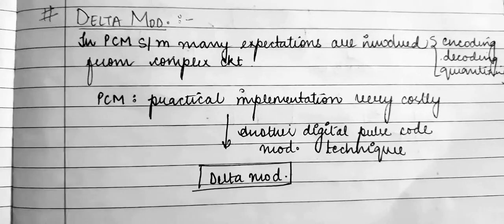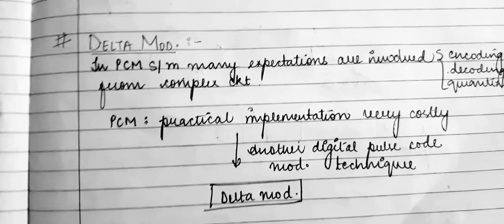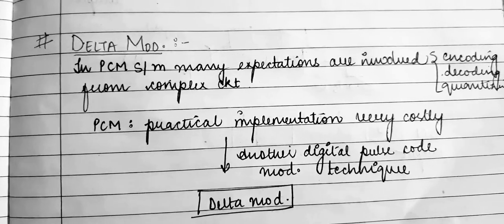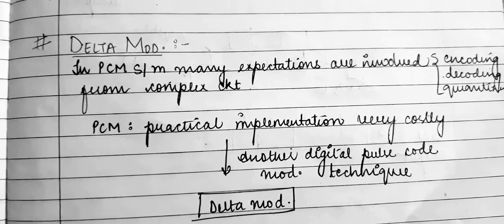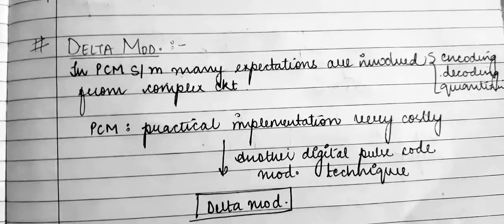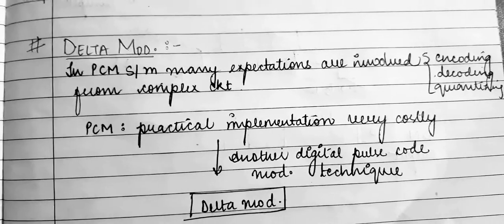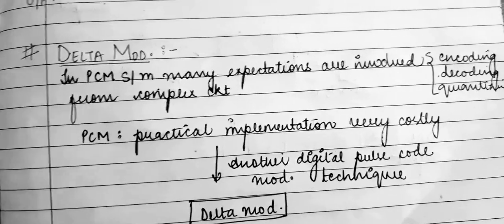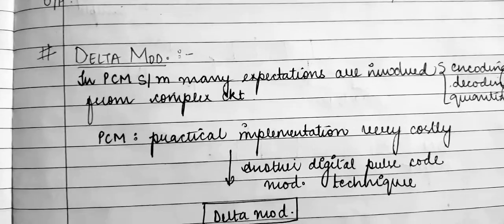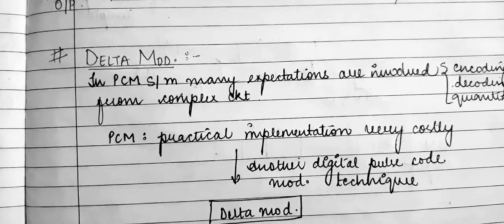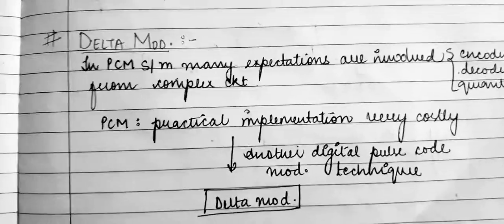Good morning to one and all. In today's lecture we will discuss about DM, that is Delta Modulation. Previously we discussed about PCM, that is Pulse Code Modulation, which involves many operations: encoding, decoding, and quantizing. Practically, the implementation of PCM is very costly, so another digital pulse modulation technique is used.